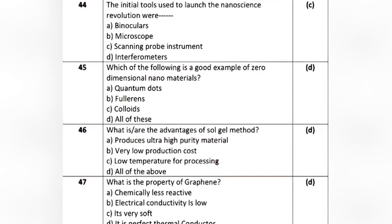Question 23: What is the property of graphene? Option A: chemically less reactive. Option B: electrical conductivity is low. Option C: it's very soft. Option D: it is a perfect thermal conductor. The correct answer is Option D: it is a perfect thermal conductor.